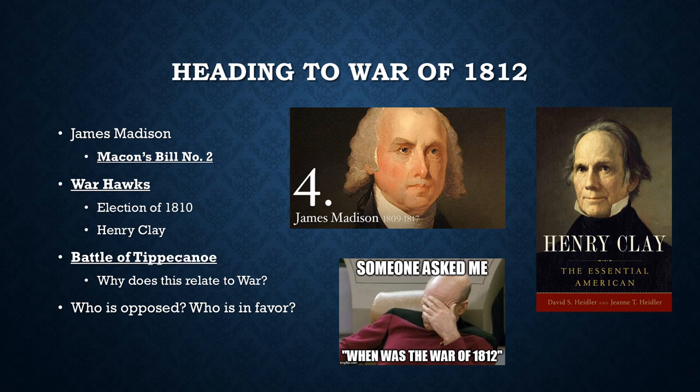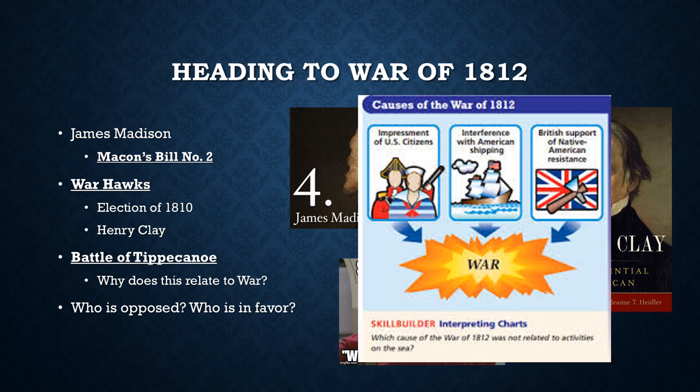The Battle of Tippecanoe and other conflicts with Natives also revealed that Britain was helping Native Americans — providing them with weapons and limited support. This further angered the U.S., particularly war hawks, who saw Britain getting involved in all of American business. Britain wasn't just attacking ships at sea — they were also helping Native Americans fight in the West. The big causes of war are: impressment of U.S. citizens, interference with American shipping through orders of council, attacking American ships, and British support for Native American resistance.